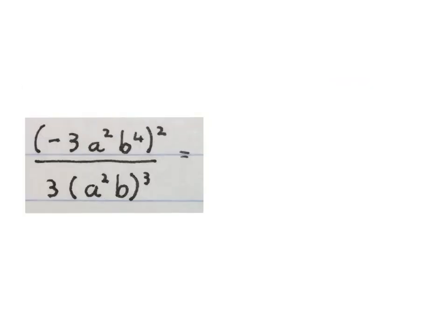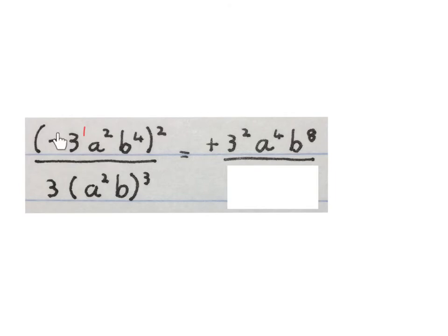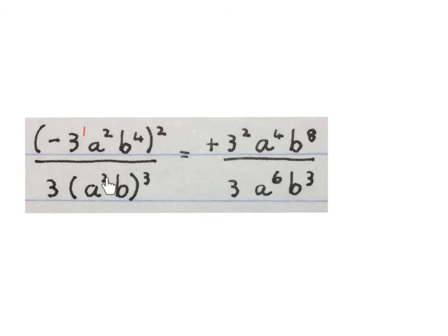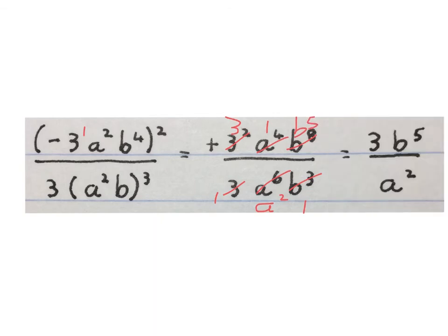The next expression looks like this, and we must simplify. We're first going to simplify the top, then the bottom, and then simplify them into each other. We square that minus 1 which becomes a plus. Then: that 1 times that 2 gives 3 to the power of 2; that 2 times that 2 gives a to the power of 4; that 4 times that 2 gives b to the power of 8. At the bottom we keep the 3 and: that 3 times that 2 gives us 6; that 3 times that 1 gives us 3. Then we can cancel: 3 goes in there once, cancel one of those threes, leaving a 3. Cancel a to the power of 4 — put a 1 there. Cancel a to the power of 4 out of there — gives us a to the power of 2. Cancel b to the power of 3 once there and cancel out the b to the power of 3 — that leaves us b to the power of 5 up there. Then that is our final answer.